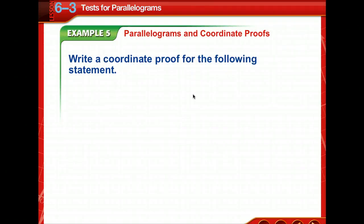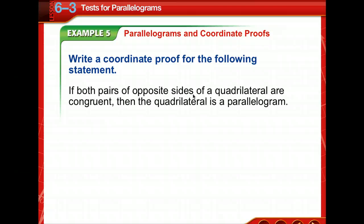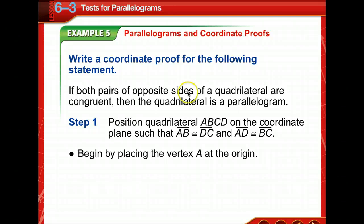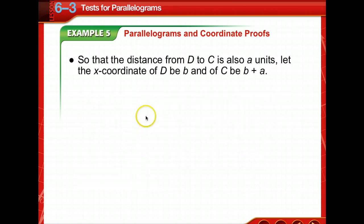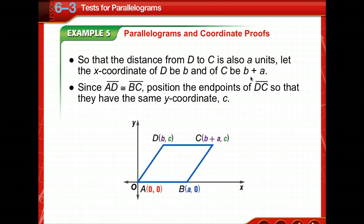In Chapter 4, you learned that variable coordinates can be assigned to the vertices of triangles. Then the distance, slope, and midpoint formulas were used to write coordinate proofs of theorems. The same can be done with quadrilaterals. Remember when we went over coordinate proofs very briefly. You're going to begin by placing the vertex A at the origin. We want to use the origin. We're going to let AB have a length of A units, so that B has the coordinates of A, 0. And the distance from D to C is also A units, so let X coordinate of D be B, and of C be B plus A.